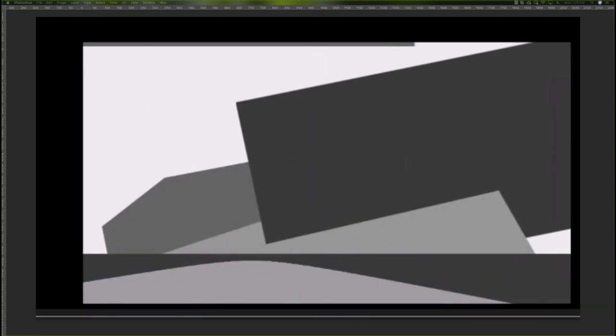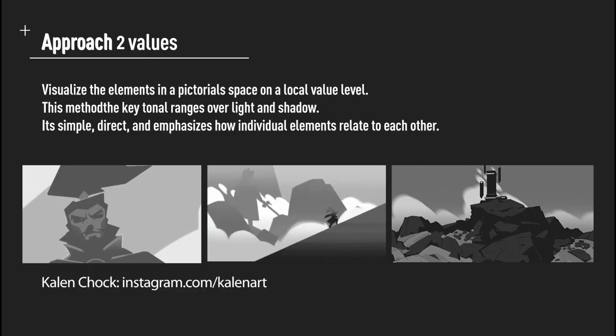Value thumbnailing at its core doesn't factor in light or shadow but just tonal range — the relative darkness or lightness of a shape to what's around it. I love it actually. It's simple, it's direct. You don't have to master lighting to do these, and it's a great way of showing how individual elements relate to each other.